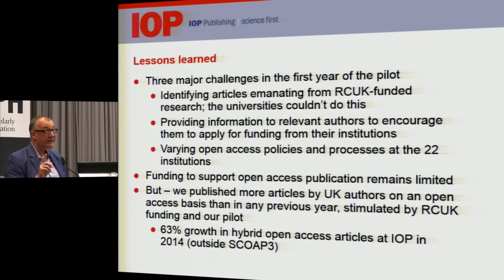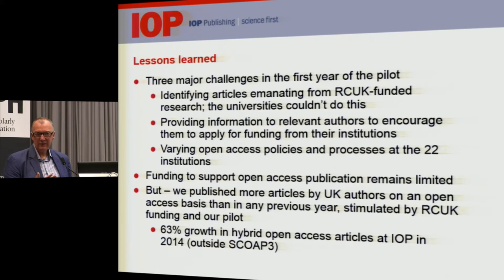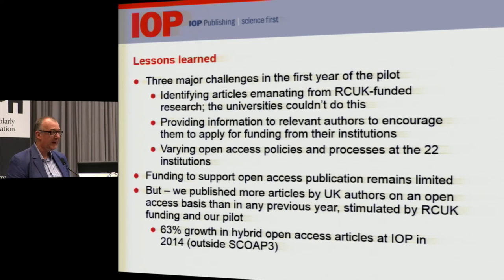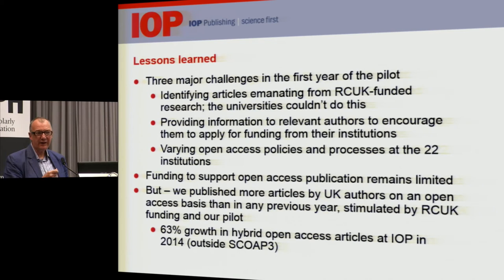With one exception, we cannot automatically publish an RCUK-funded research paper on an open access basis because funding is limited. About 20% of papers by UK authors come from RCUK-funded research; 80% does not. On top of that, RCUK is not yet providing enough funding to enable all papers from its research to be published open access. So universities are throttling back demand from their own authors — every author has to go back to their institution to ask whether funding is available to publish their paper with IOP on an open access basis.